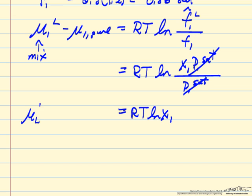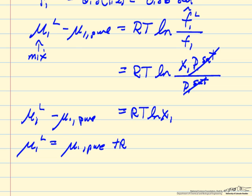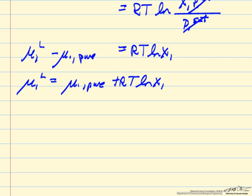So chemical potential mixture, liquid phase, chemical potential pure component. And so we can calculate chemical potential liquid phase mixture as the pure component chemical potential plus this term that has the mole fraction.